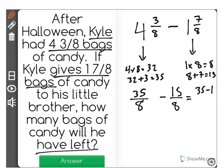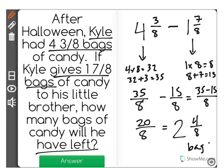Now I have a simple subtraction problem. 35 minus 15 over 8 is equal to 20 eighths. And when I simplify that, I can see that I have an answer of 2 and 4 eighths bags of candy.